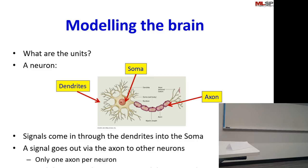The axon is covered by something called the myelin sheath, formed by glial cells — it's mostly fat. So how intelligent you are is not decided so much by the number of neurons in your head as by the amount of fat in your head. Being called a fat head is like a great compliment.